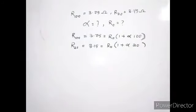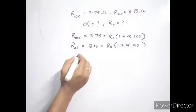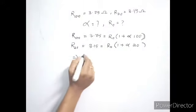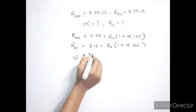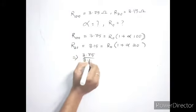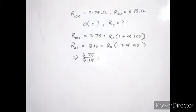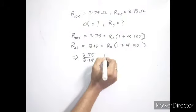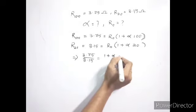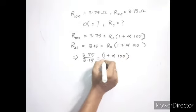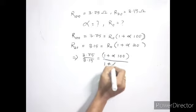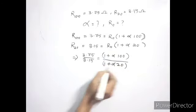Using both these equations we take the ratio. That gives 3.75 divided by 3.15 on the left-hand side, equal to the ratio of the right-hand sides where the R₀ terms cancel out, leaving 1 plus alpha times 100 divided by 1 plus alpha times 20.